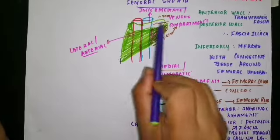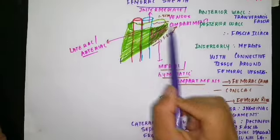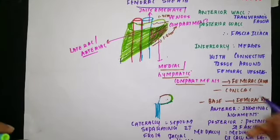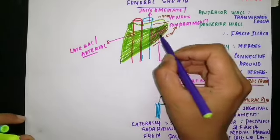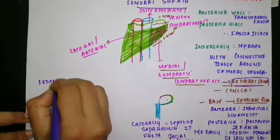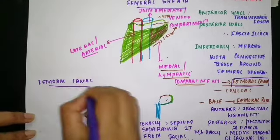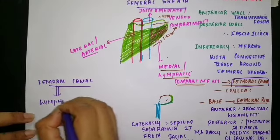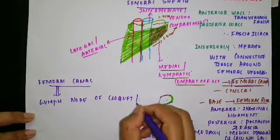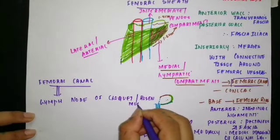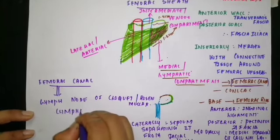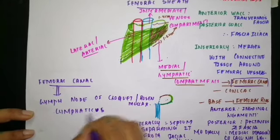The medial compartment, known as the femoral canal, contains the lymph node of Cloquet (or of Rosenmuller), which drains the glans in males and clitoris in females. Besides this, it also contains lymphatics and areolar tissue.